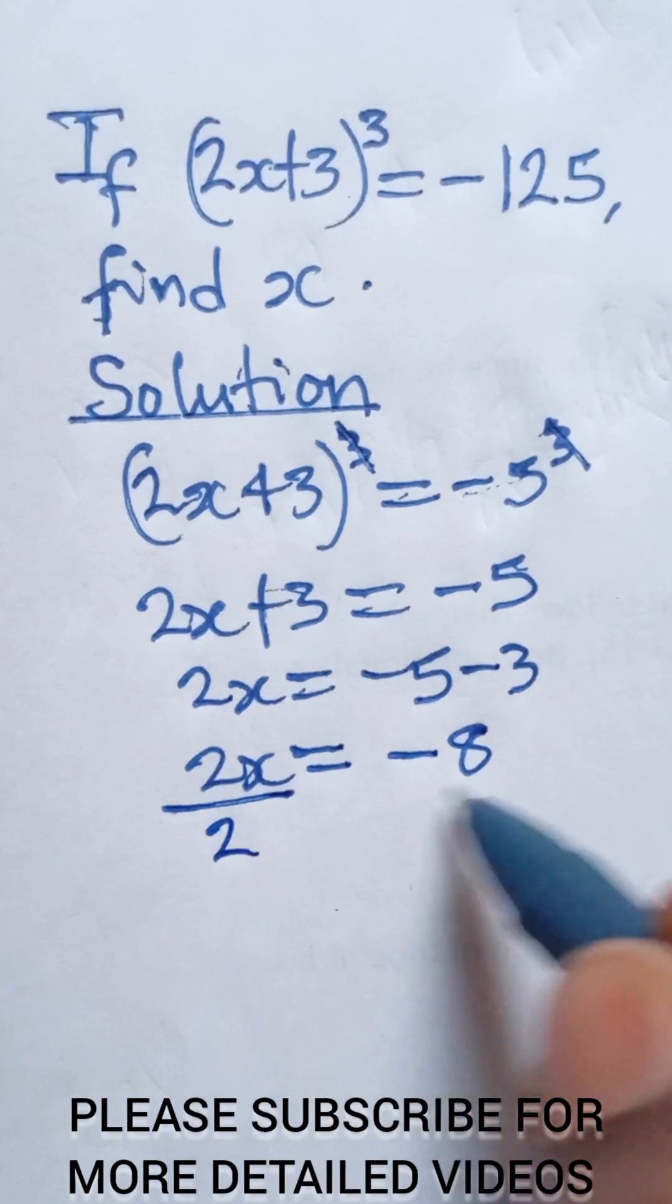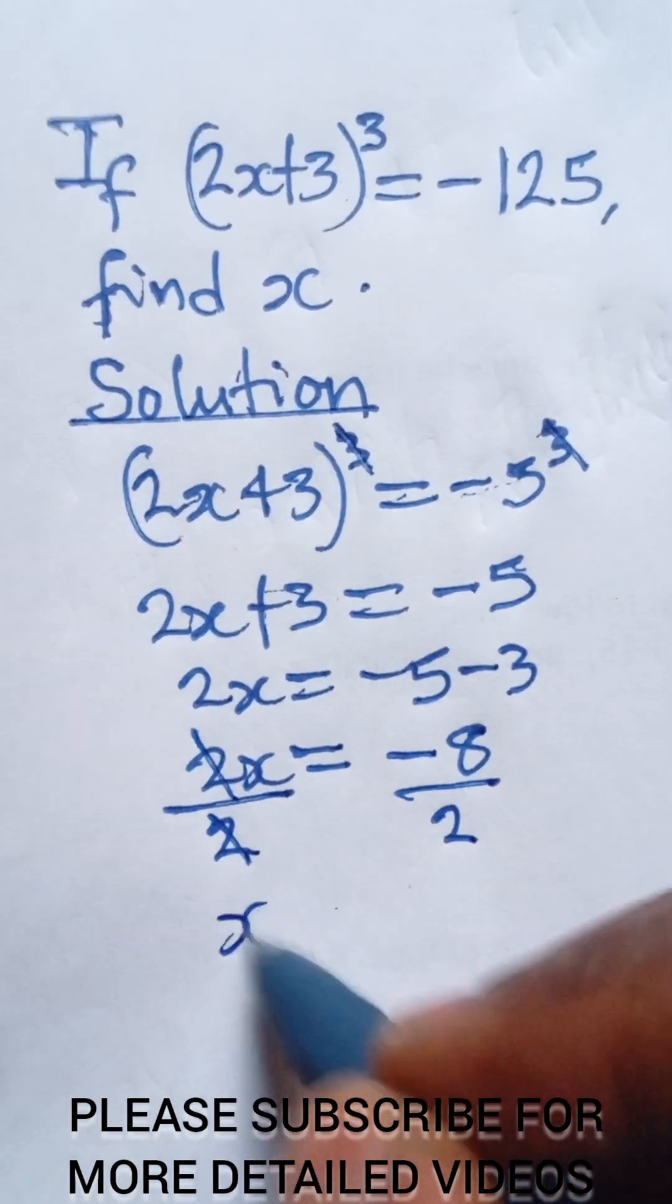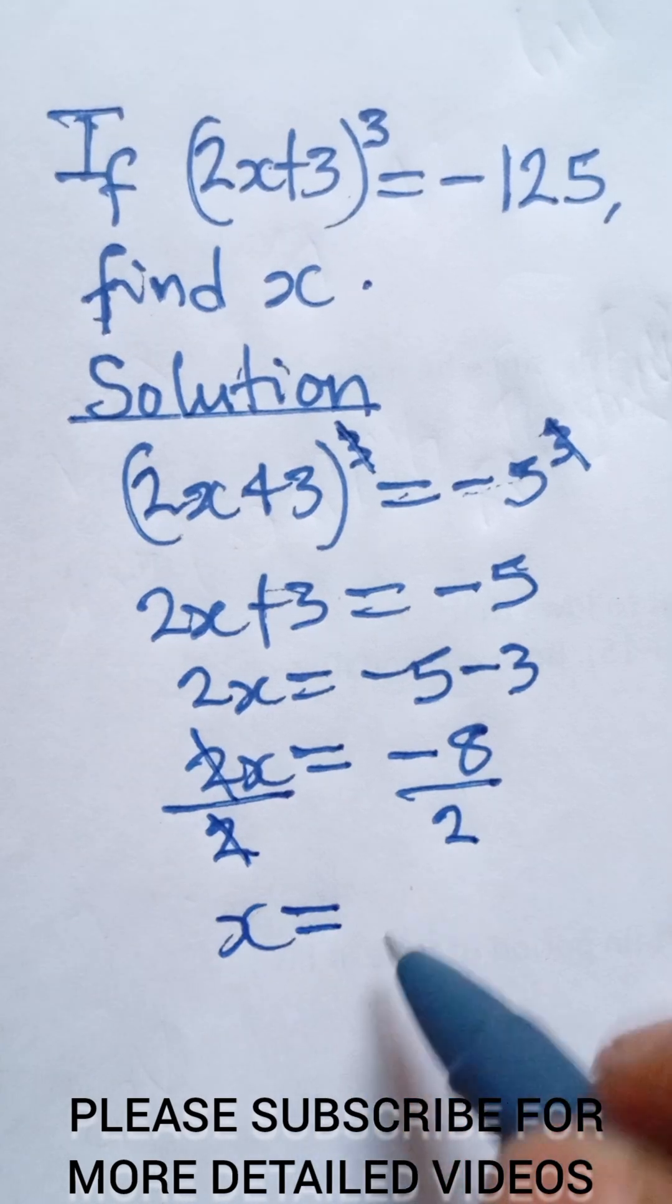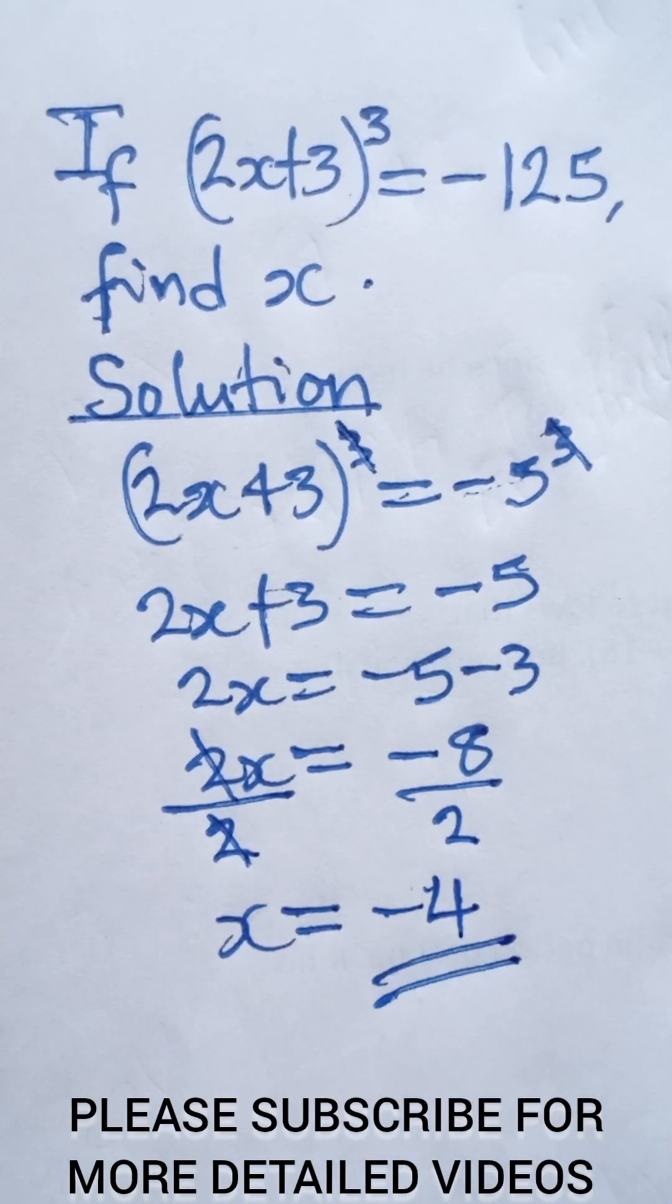And then we divide both sides by 2, divide this by 2. 2 cancel 2, we are left with x. And that will be equal to this divided by this is going to give us negative 4, which is the final answer.